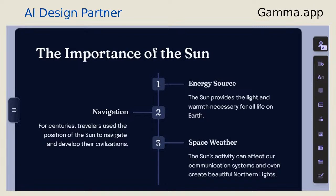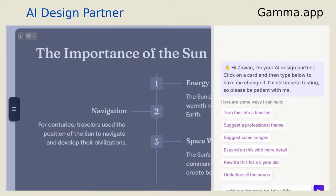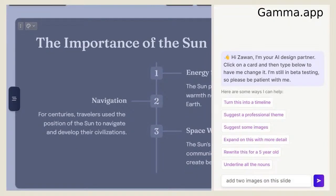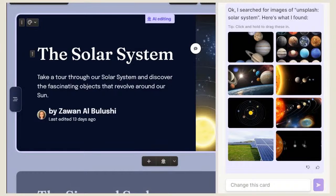So I clicked on that AI button, and it opened the AI designer panel with prompt cards. I knew what I wanted — two images for this slide. So I typed 'add two images on this slide.' It searched Unsplash for solar system images and gave me eight images to choose from. The panel shows instructions to click, hold, and drag an image into the slide. I selected one photo and dragged it into the slide I wanted.